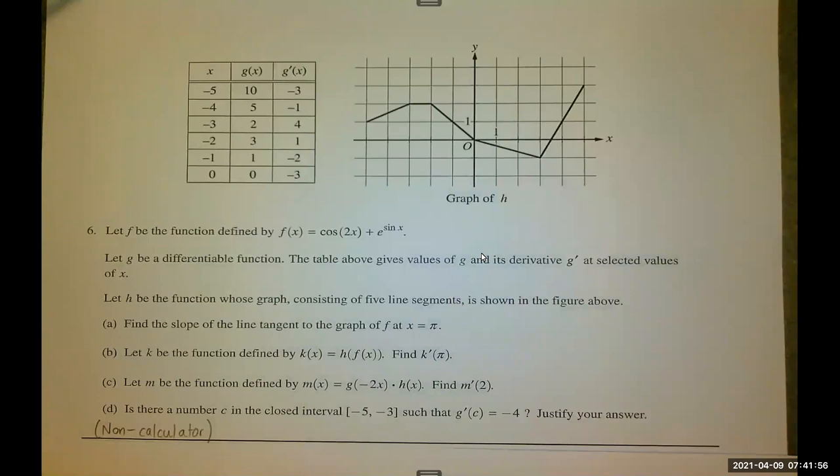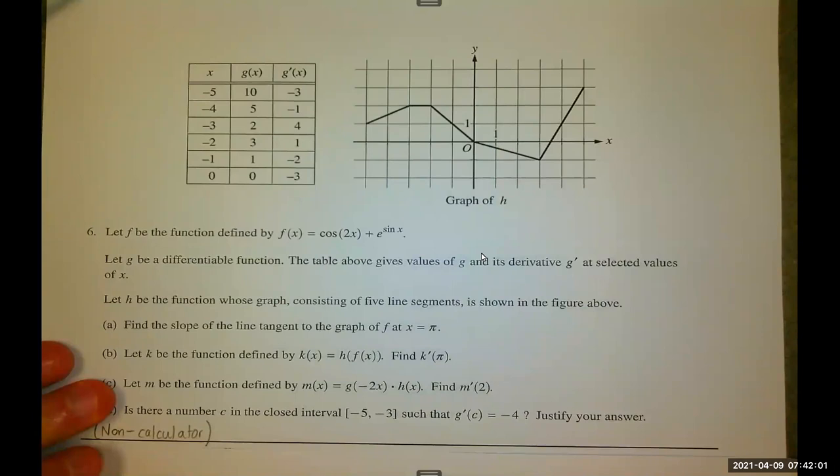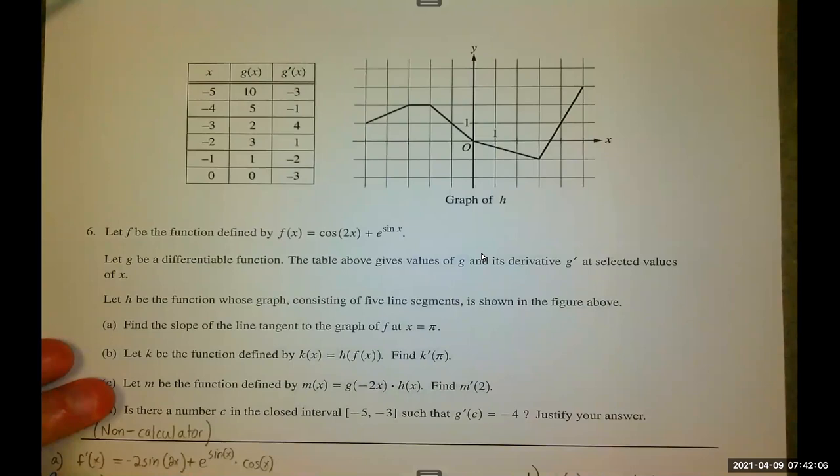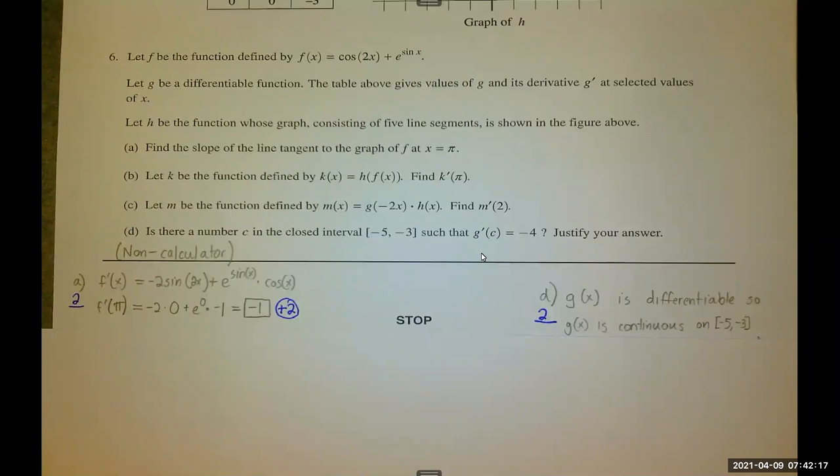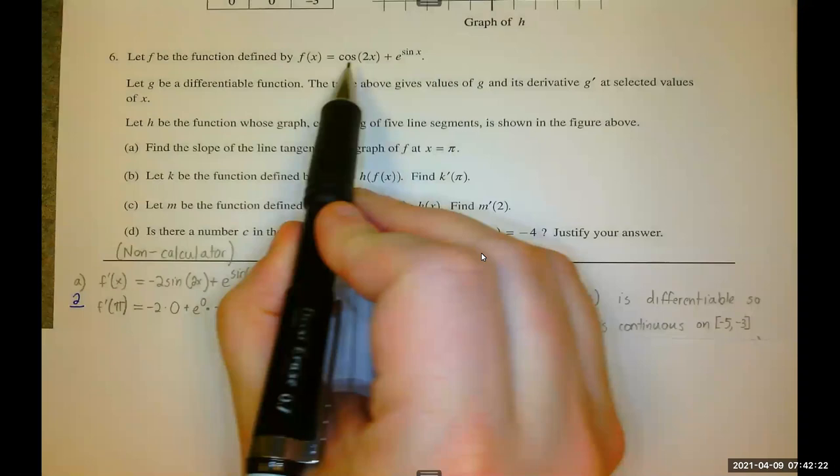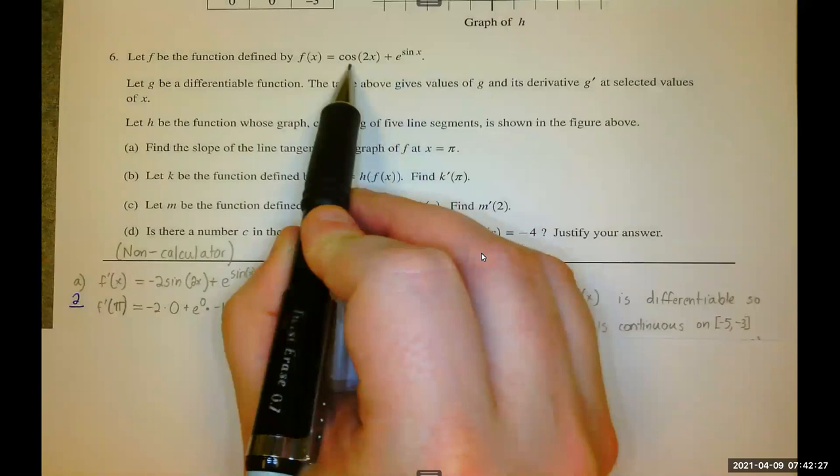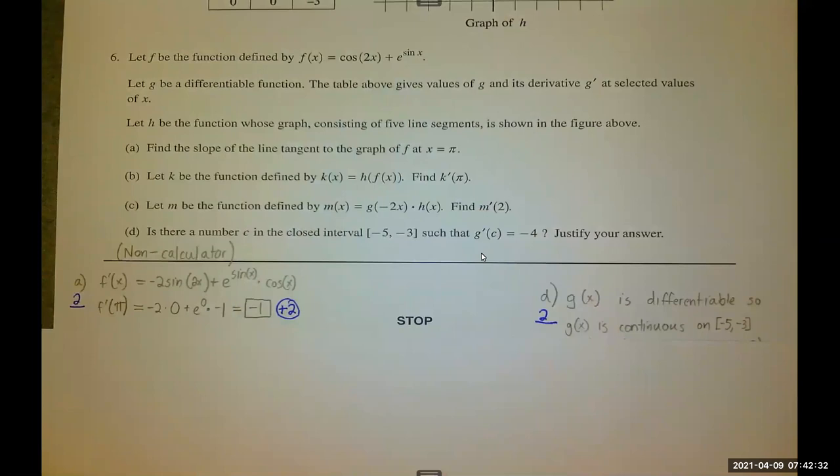I will next go over my work. And then, as always, scoring guidelines. So continuing with my work, here's part A. In part A, you are asked to find the slope of the line tangent to the graph of F at X equals pi. F is the equation. So I need to know the quotient shortcut, the exponential base E shortcut, and the chain rule twice. I did all of that. I got negative one.